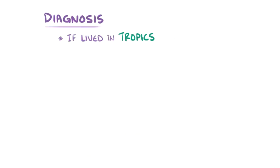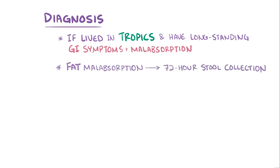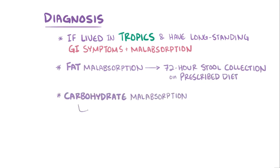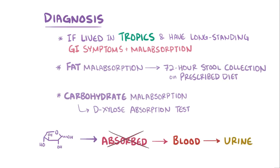The diagnosis of tropical sprue is usually made in individuals who have lived in the tropics and have long-standing gastrointestinal symptoms and malabsorption. Fat malabsorption can be investigated by doing a 72-hour stool collection test while on a prescribed diet. Carbohydrate malabsorption can be assessed using a D-Xylose absorption test — normally D-Xylose is absorbed in the intestines, gets into the bloodstream, and is filtered into the urine, but if it's not absorbed, less gets excreted in the urine.